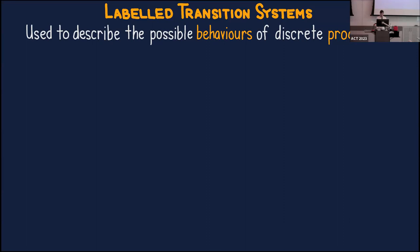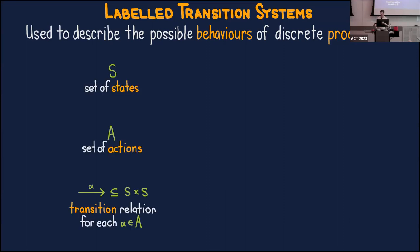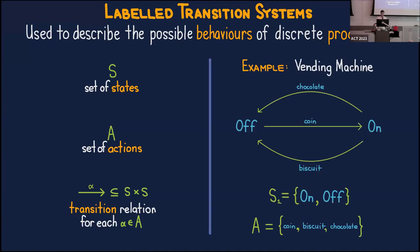So what is a labeled transition system? It consists of a set S of states, a set A of actions or labels, and for each action a transition relation on the set S. The interpretation is: if s and s-prime are related by the transition relation for an action alpha, then if the system started in state s it's possible to perform action alpha, and doing so will result in the system ending up in state s-prime.